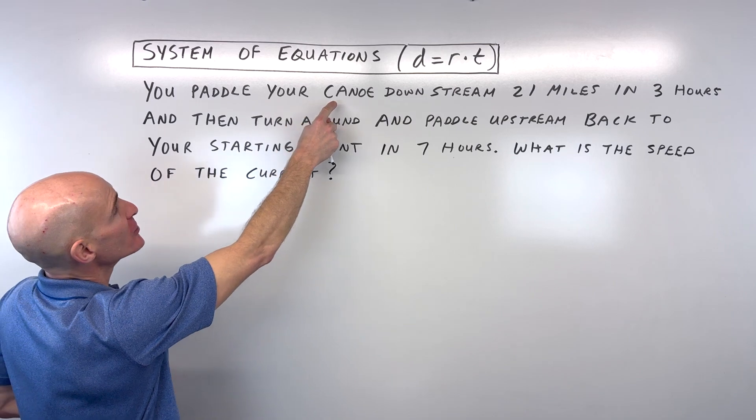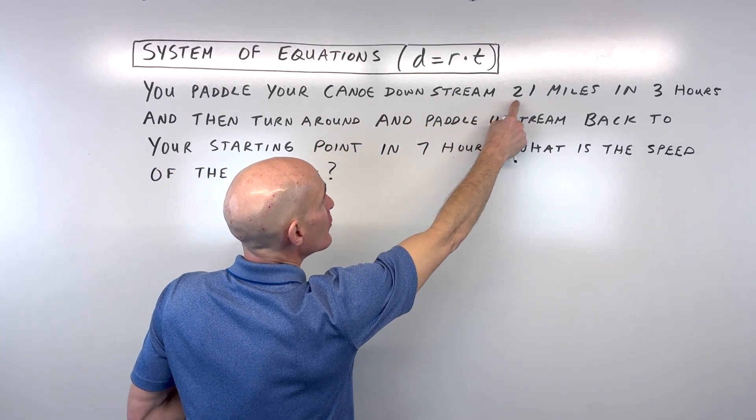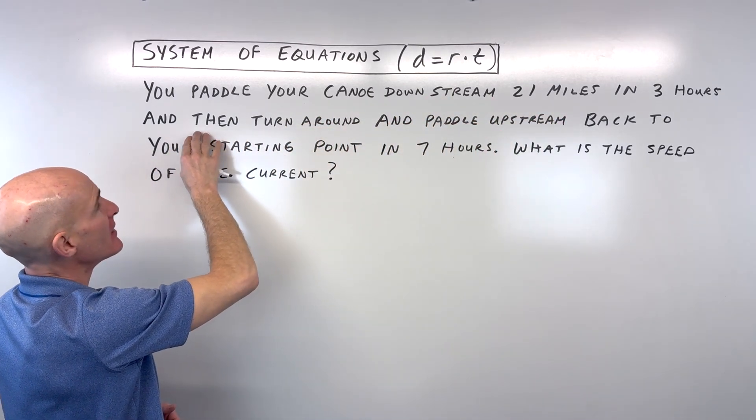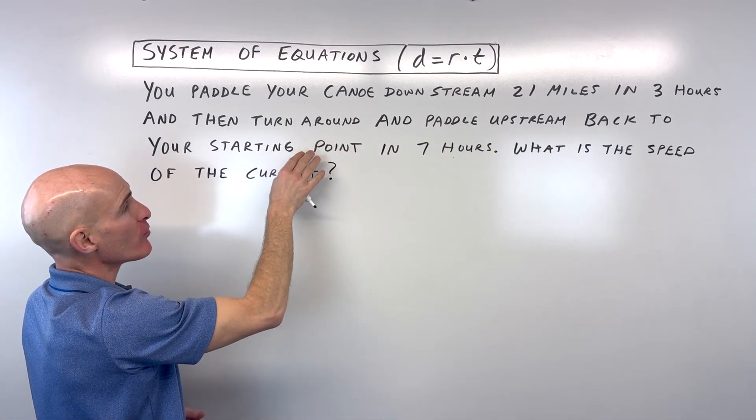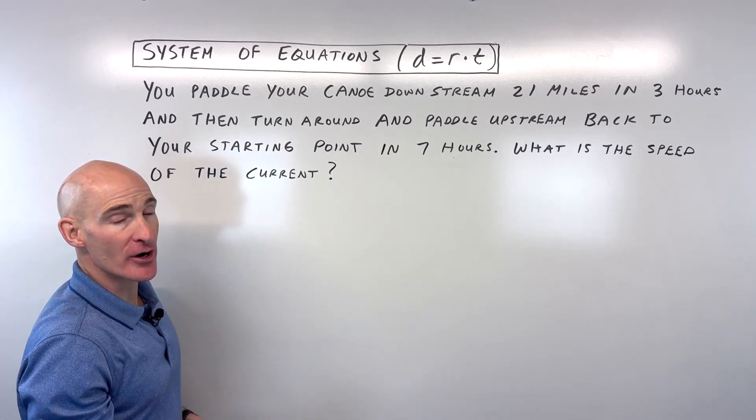It says you paddle your canoe downstream 21 miles in three hours, then you turn around and paddle upstream back to your starting point in seven hours. What is the speed of the current?